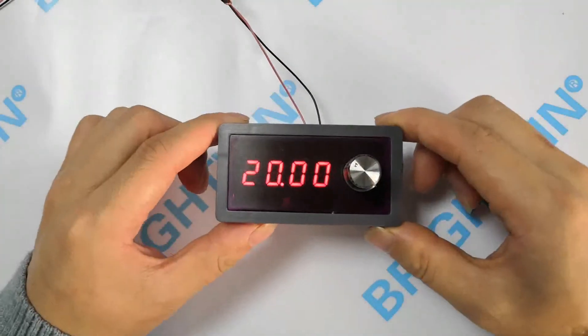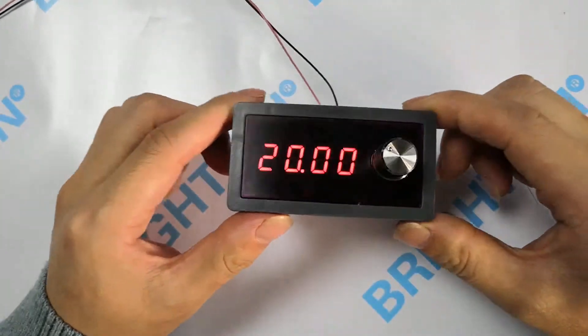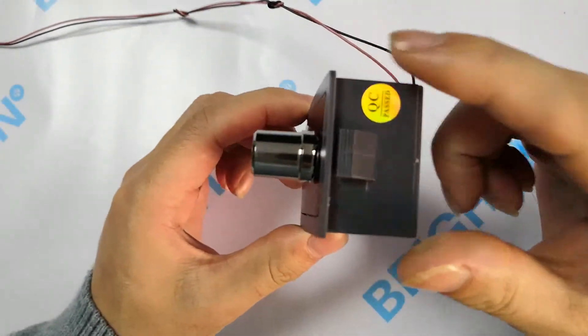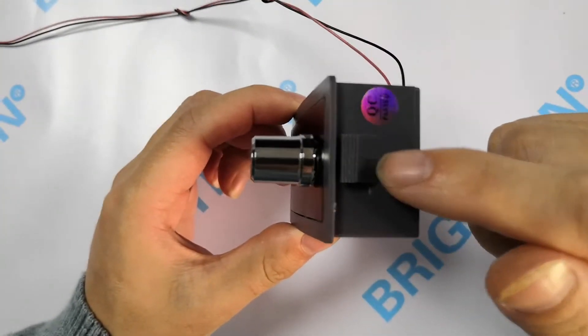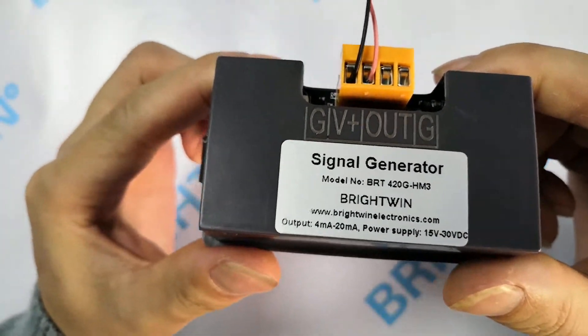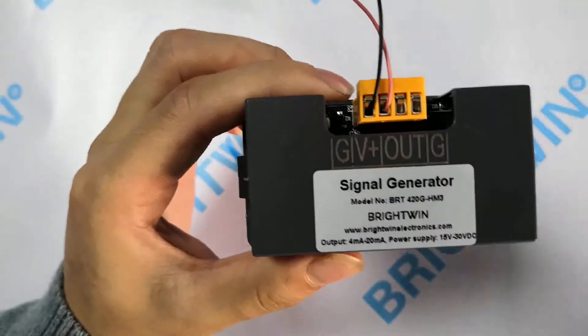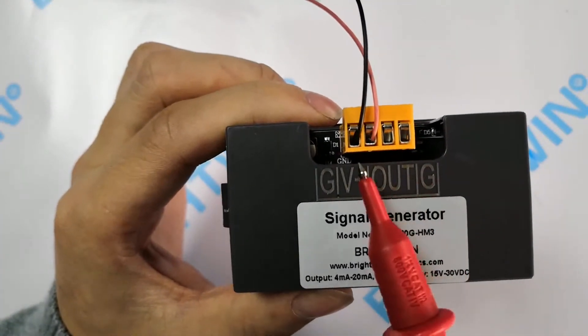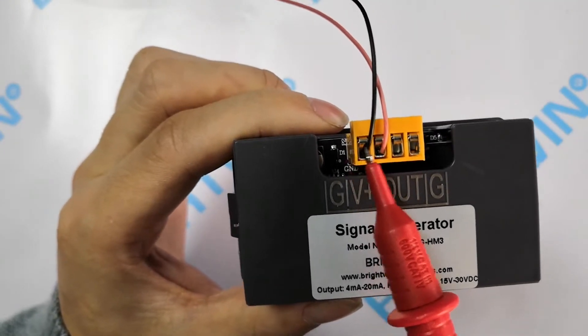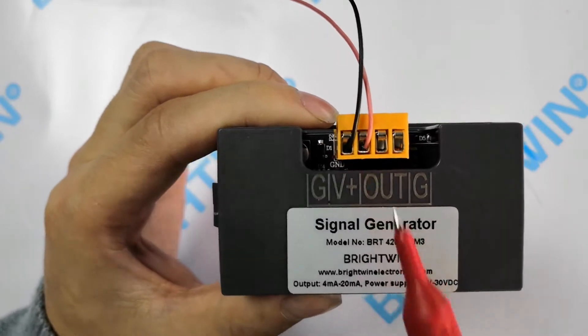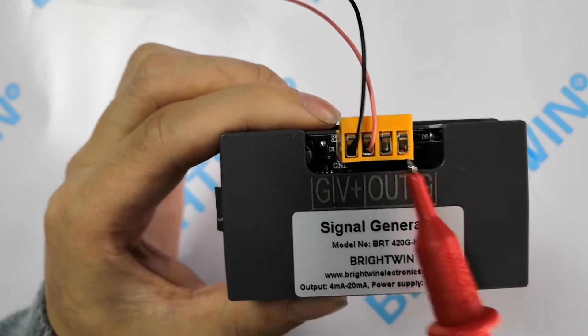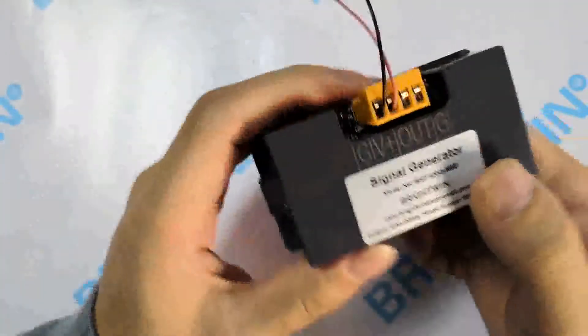Now let's check its external shell: the encoder knob for integration purpose, the product label with website and model number, and the terminal blocks. 24 volt operating power supply inputs negative and positive, signal outputs positive and negative.